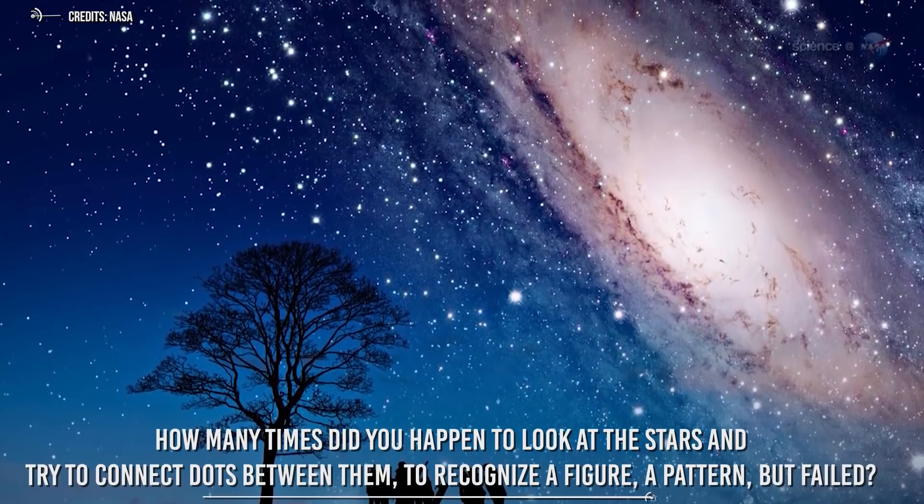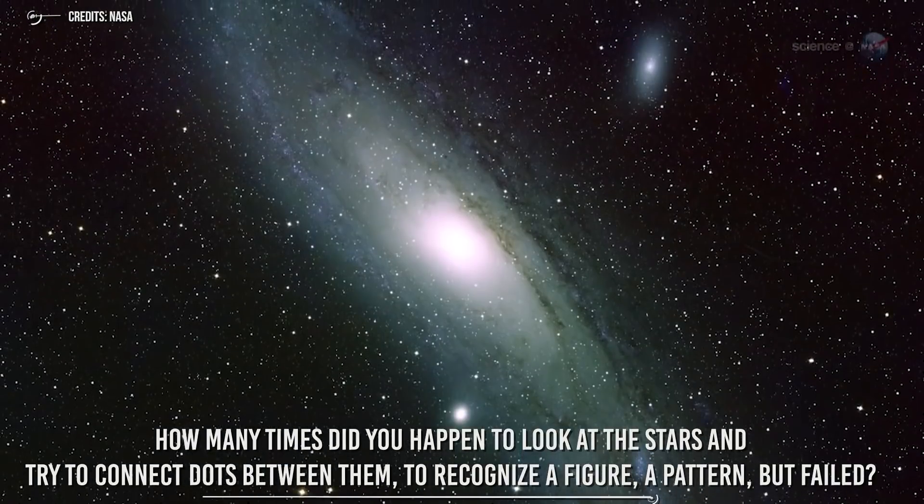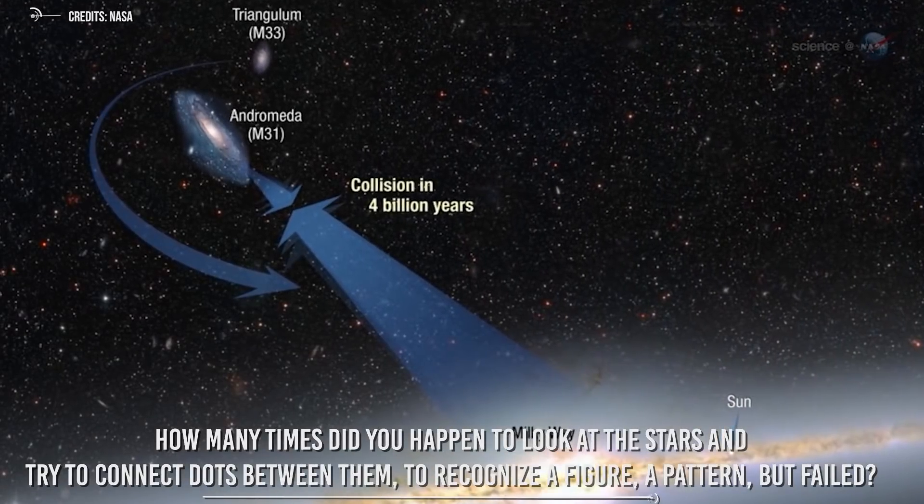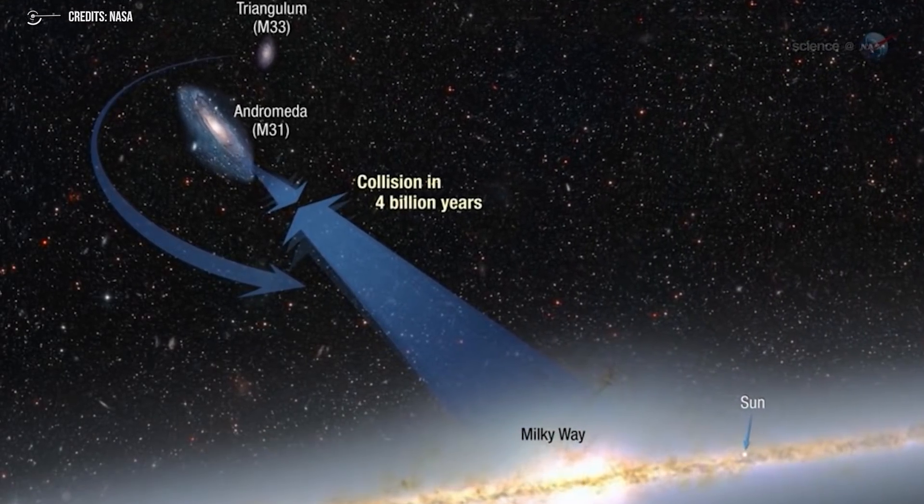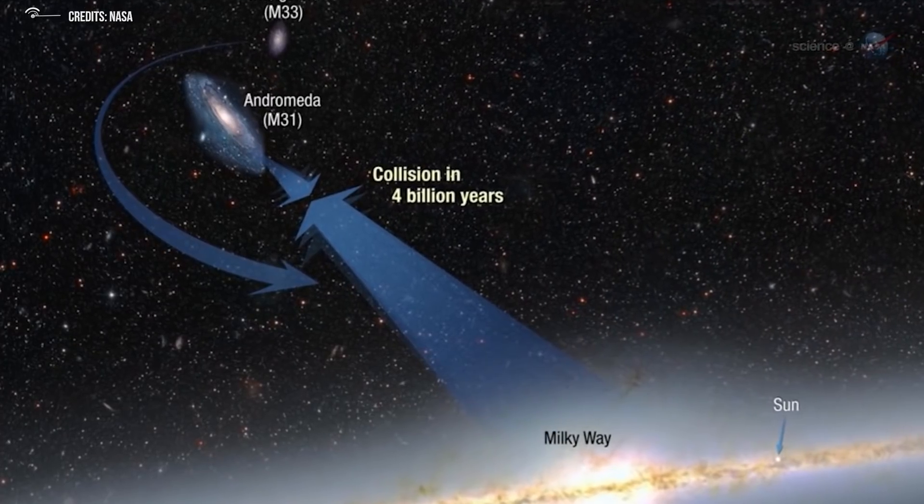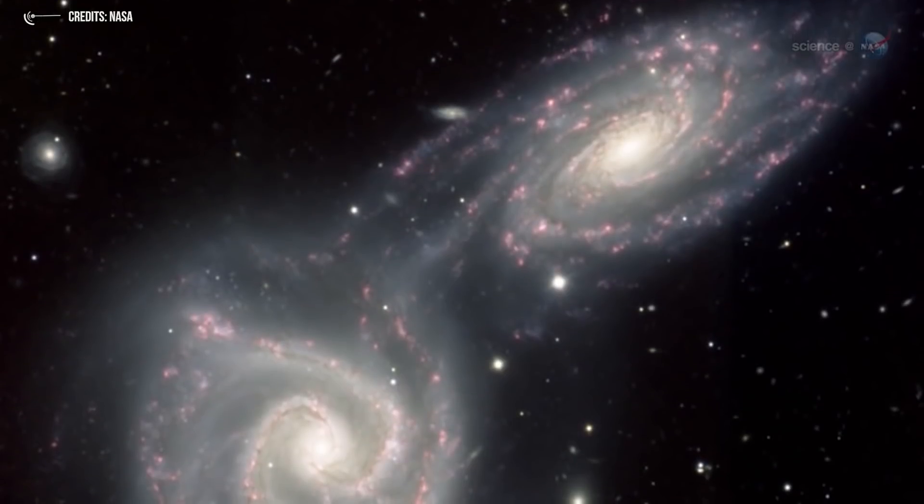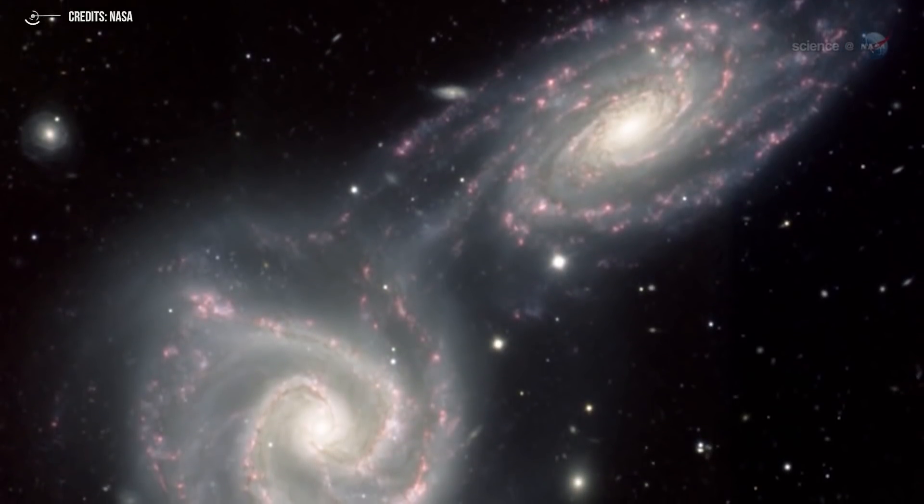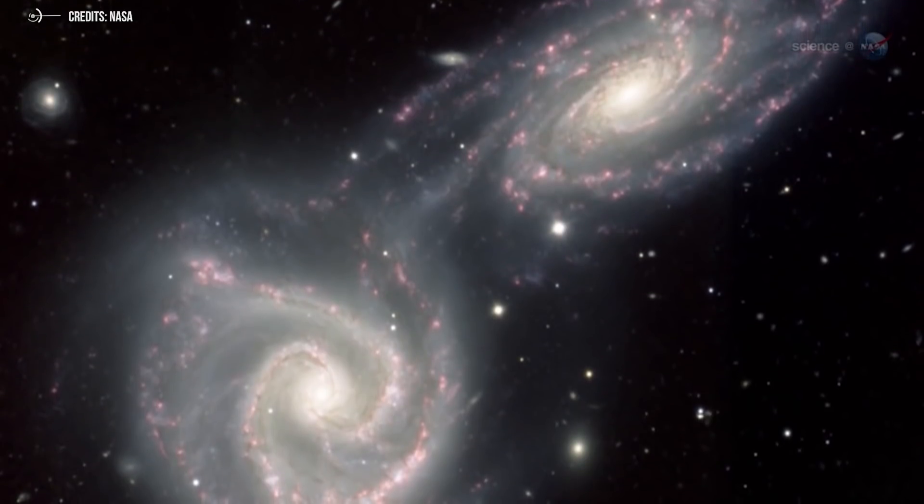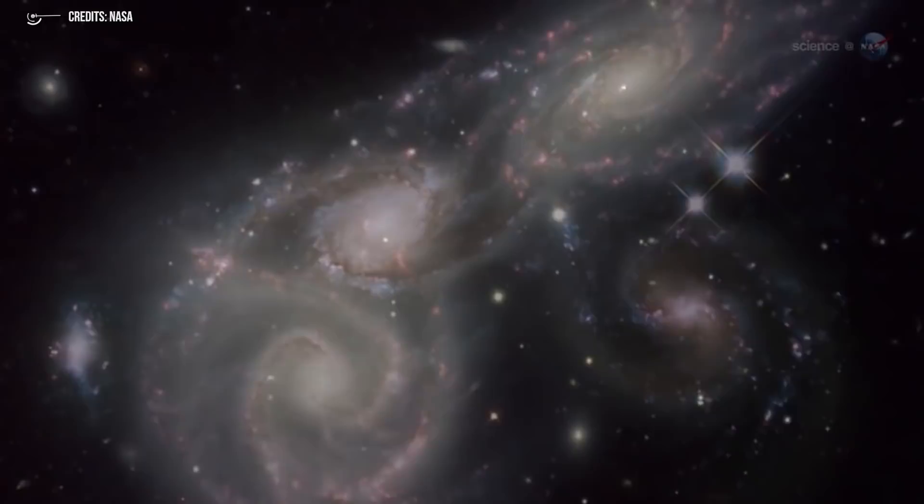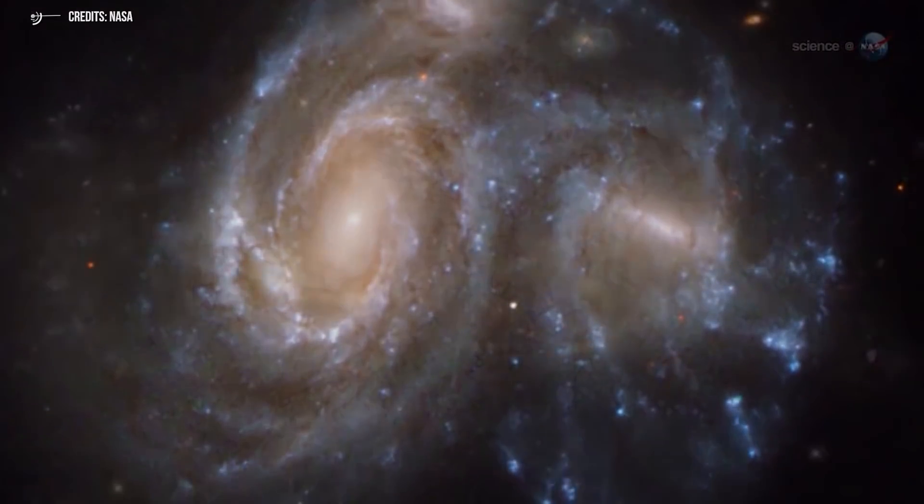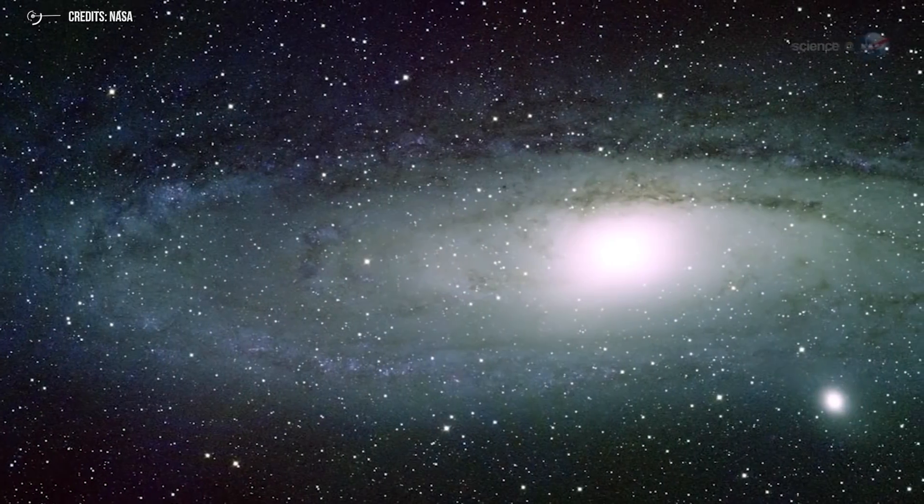Now I want to ask you, how many times did you happen to look at the stars and try to connect dots between them to recognize a pattern, a figure, but failed? Well, this will never happen, because now I'm going to explain how to admire Andromeda. First of all, for the best vision, you need to be in the northern hemisphere. This is because, changing latitude and going towards the south, Andromeda moves closer toward the horizon. In short, the further south you stand, the lower it is. And if you live at about 40 degrees south latitude, I have bad news for you. At those latitudes, Andromeda disappears completely.